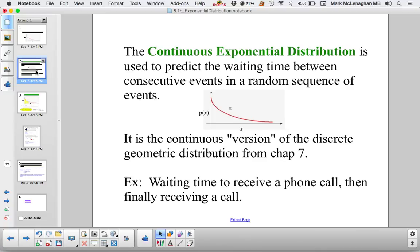It's very similar to the geometric distribution for discrete probabilities. So again, we're concerned with waiting times. To receive a phone call, how many minutes you have to wait until that call occurs.